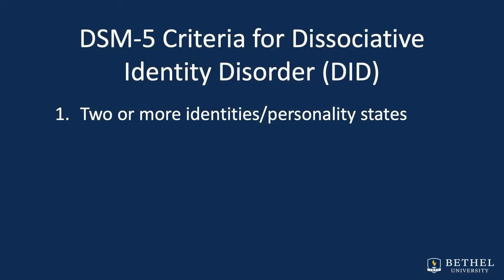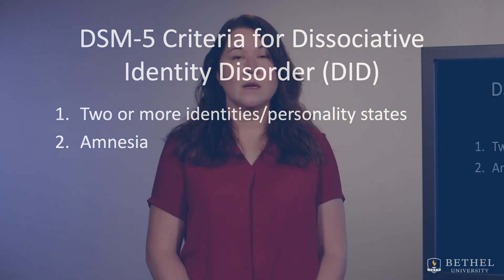The second Dissociative Identity Disorder criterion in the DSM-5 is that amnesia must occur. Amnesia is defined as gaps in the recall of everyday events, important personal information, and/or traumatic events. It's not just about traumatic events — it can be everyday events, such as missing a chunk of time in the day on any given day.